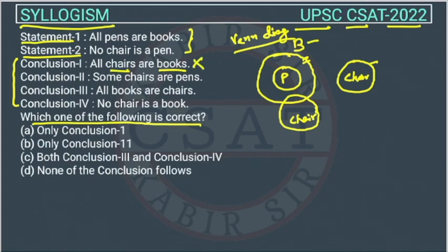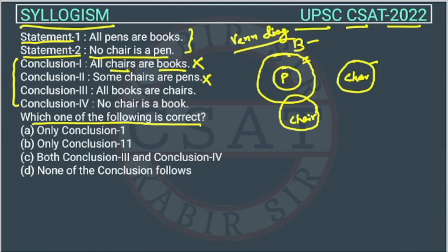Conclusion 2: some chairs are pen. The relationship between chair and pen is being asked here, but the statement already says no chair is a pen. So this conclusion is also wrong.